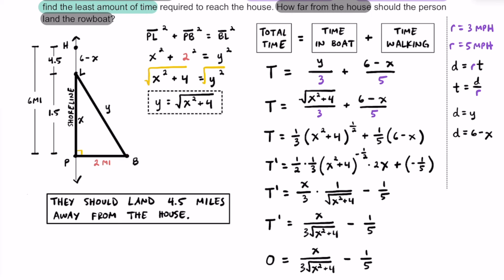Just in case you wanted to know: now that we found X equals 1.5, if you wanted to find out how much distance they spent on the boat, you can substitute 1.5 in for X in the equation Y equals the square root of X squared plus four, and that would tell you the distance spent on the rowboat. So there you have an optimization problem dealing with a person spending some time in a rowboat and some time walking — we're trying to optimize and find the least amount of time required to get from point B in the water to point H at the house. The combination we found is: they should land 4.5 miles away from the house and walk the rest of the way to optimize the least amount of time.